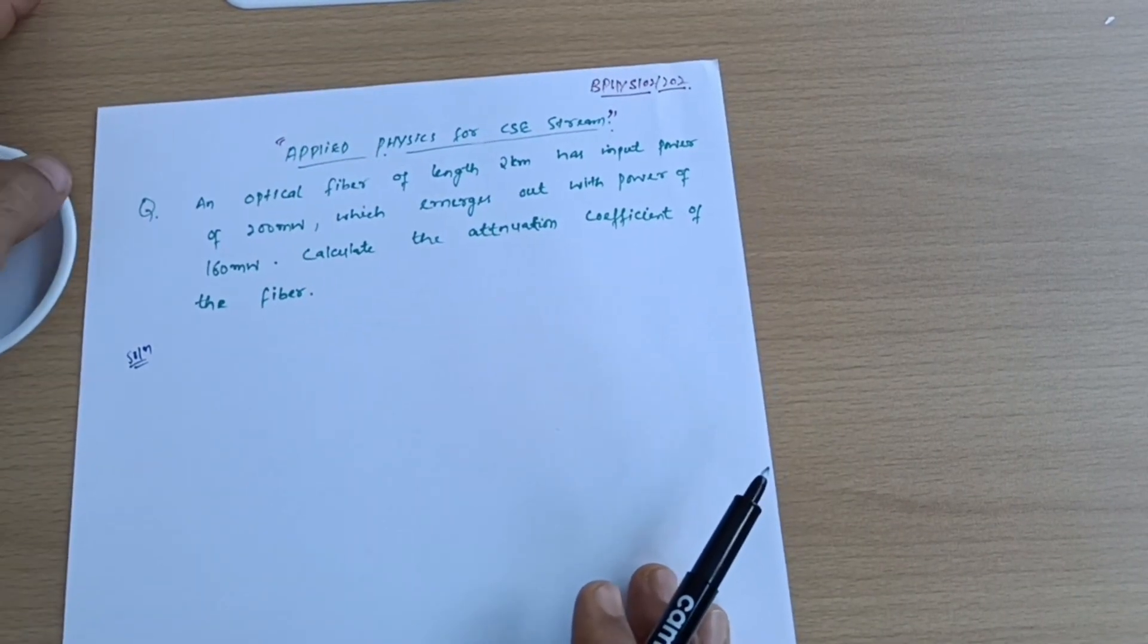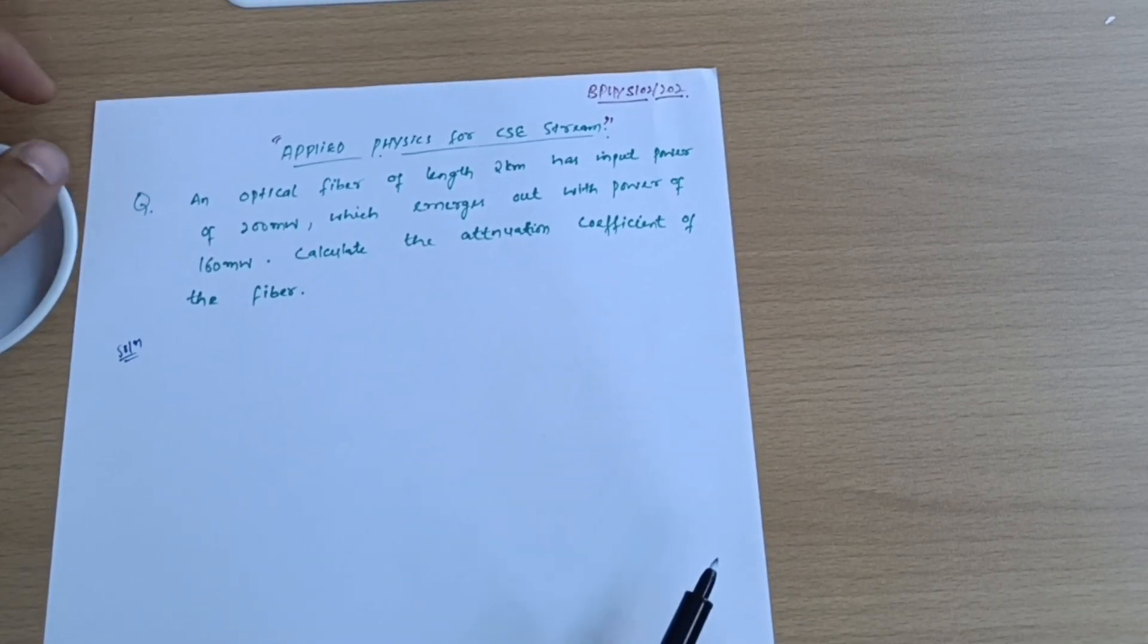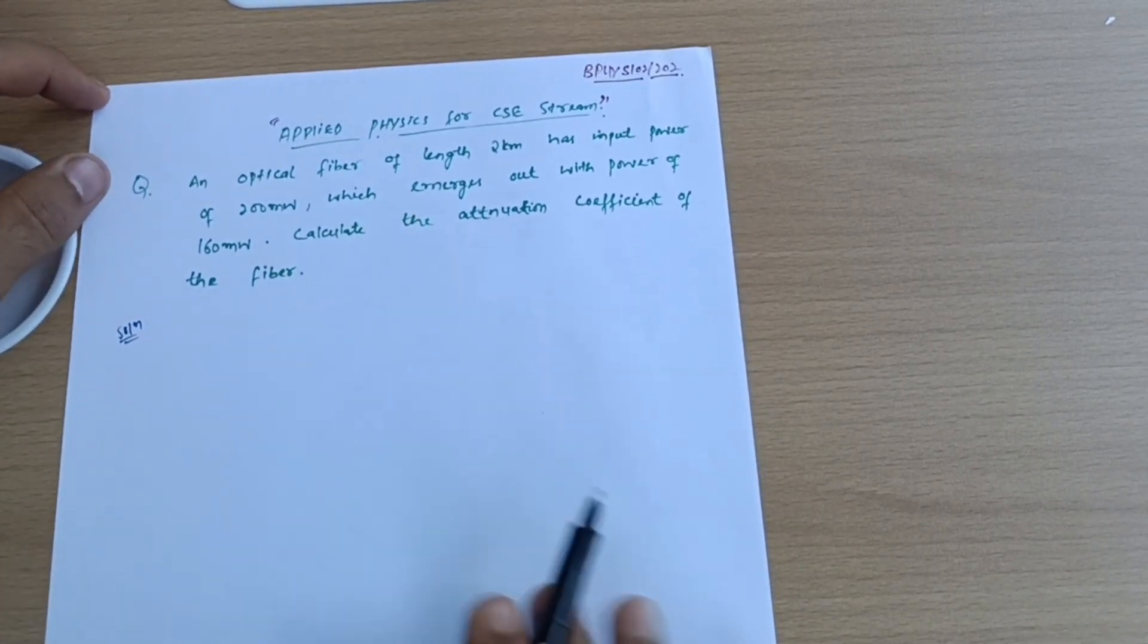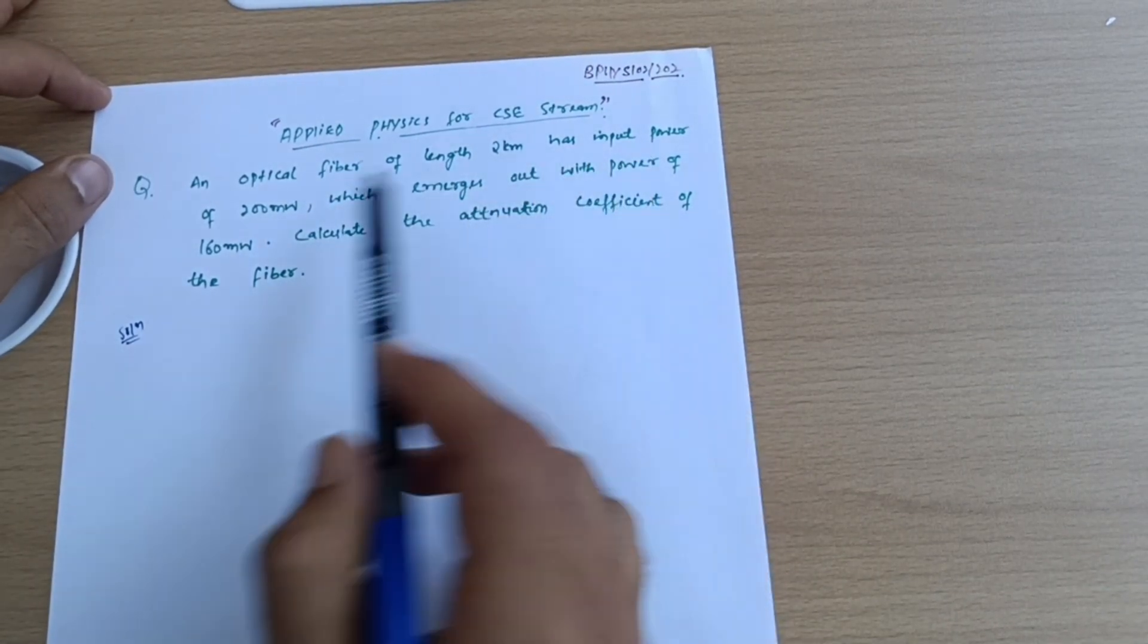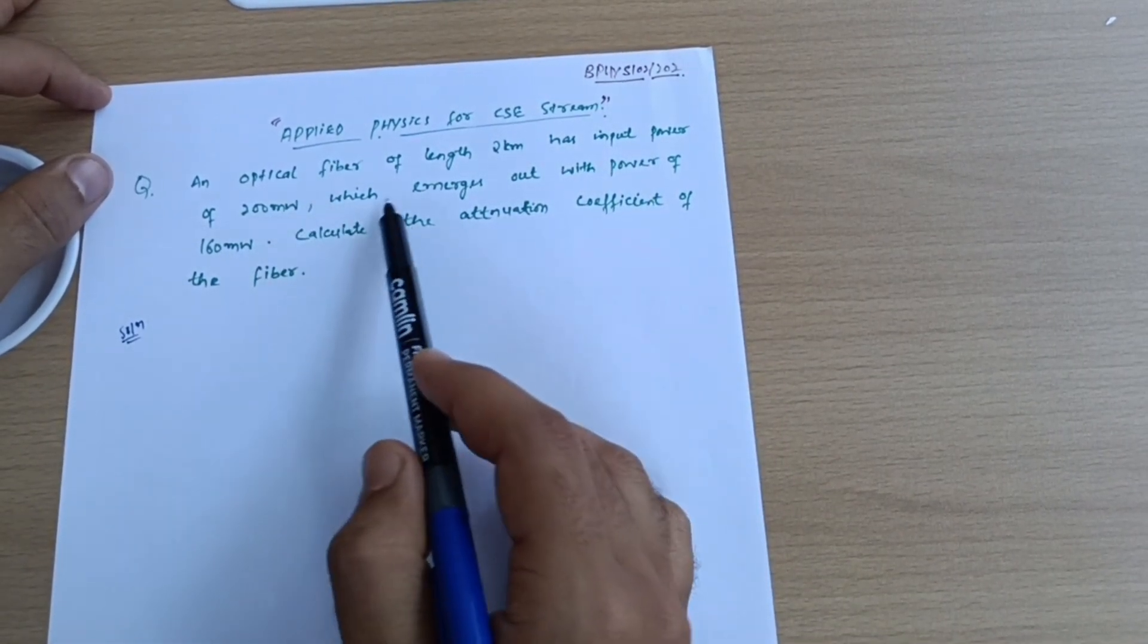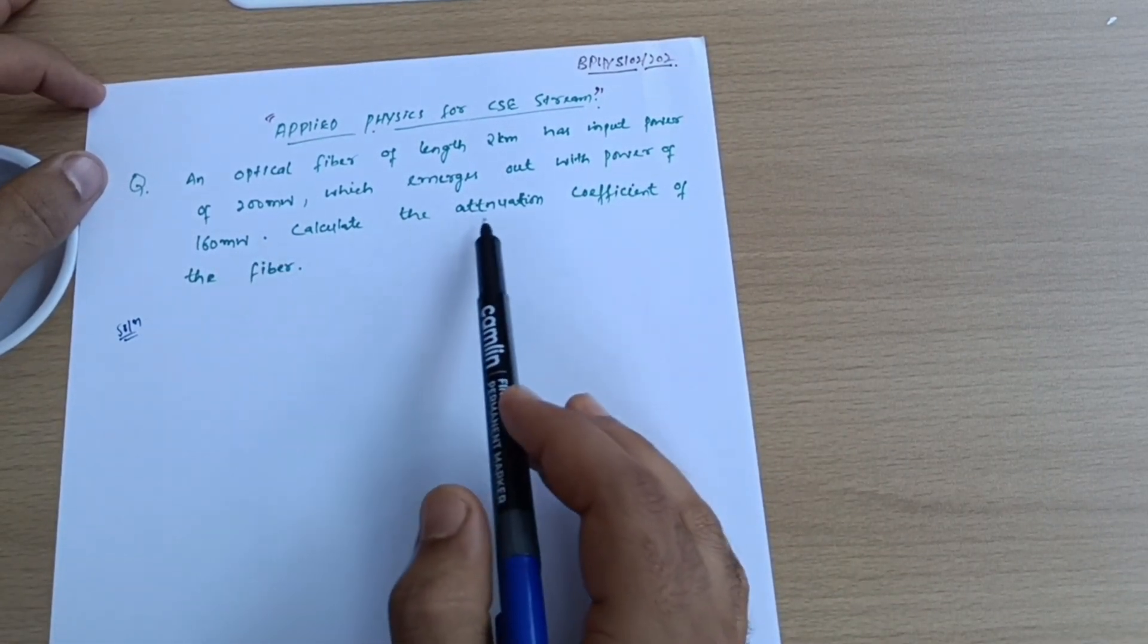So they have to refer this question, and I have taken these questions from the previous year question papers, like makeup paper. So an optical fiber of length 2 kilometers has input power of 200 milliwatts, which emerges out with the power of 160 milliwatts. Calculate the attenuation coefficient of the fiber.